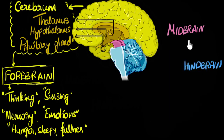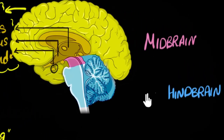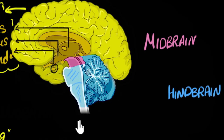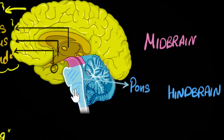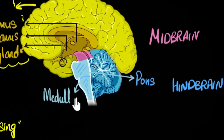We're not going to look at the parts of the midbrain — it's a tiny section — so let's jump directly to the hindbrain. Looking at this brain stem, the blue section, you can see two distinct regions. One region is called pons — it's a Latin word meaning 'bridge,' as it bridges between the midbrain and the bottom part. The bottom part is called the medulla oblongata.